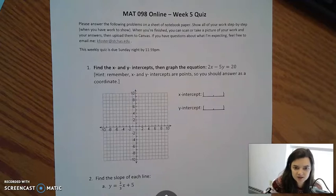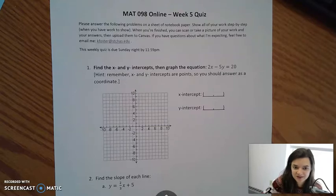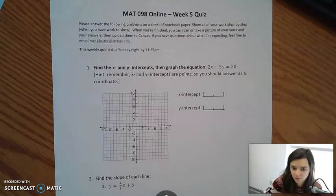The first question asks you to find the x and y intercepts, then graph the equation 2x minus 5y equals 20. I'll give you a hint. Remember, x and y intercepts are points. Sometimes you're really tempted to just give me numbers, but remember they are points, which means you should be answering as a coordinate, not just as a single number.